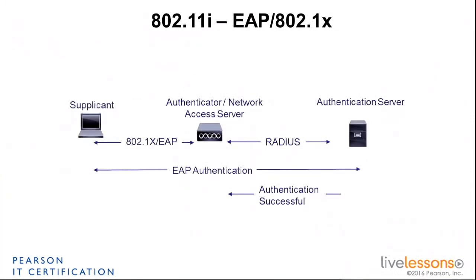This choreography was defined in 802.11 in an amendment that came out in 2004, which is 802.11i, that allows two mechanisms: one is the pre-shared key system for small networks, and for enterprise security they combine 802.1x and EAP together.